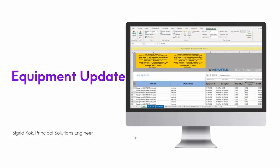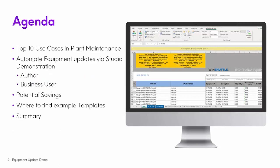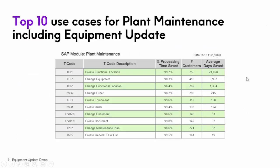Today, we'd like to cover how you can use WinShuttle Studio to automate equipment updates. The agenda will cover the top 10 use cases in plant maintenance. We'll cover automating equipment updates from two different perspectives — from the author of the automation as well as the business user who consumes it. We'll talk about potential savings, where to find examples, and a quick wrap-up. You can see the top 10 use cases for plant maintenance, and number two is change equipment. Almost all of these have over 99% time savings versus doing it manually, and lots of customers are automating this using WinShuttle Studio with lots of days saved.